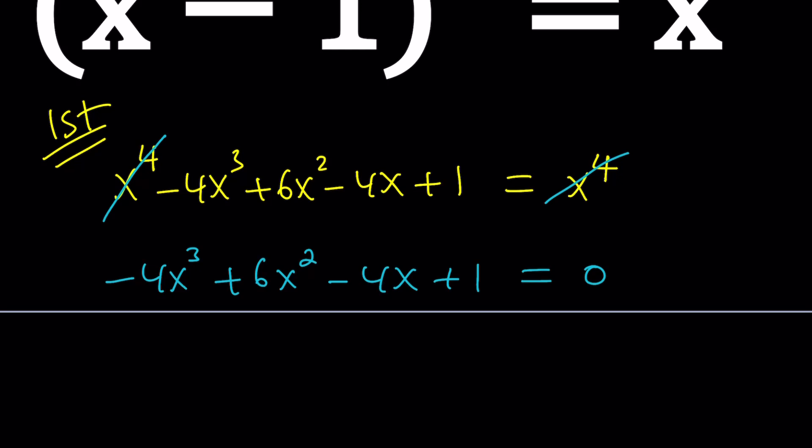First of all, we want to make this a monic polynomial, which means the leading coefficient will be 1. One way to do this is, first of all, x^3 is a perfect cube, but 4 isn't, or negative 4 isn't.